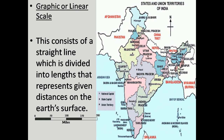The second way to represent map scales is graphical or linear scale. This consists of a straight line divided into lengths that represent given distances on the earth's surface, usually drawn near the lower portion of the map. Here you can see a diagram of the linear scale divided into four equal parts, one centimeter apart, with each part representing 50 kilometers on the ground. The user places a straight-edged paper or string beside the two points to be measured, marks those points, and measures the distance using the scale at the bottom of the map to find the actual distance.